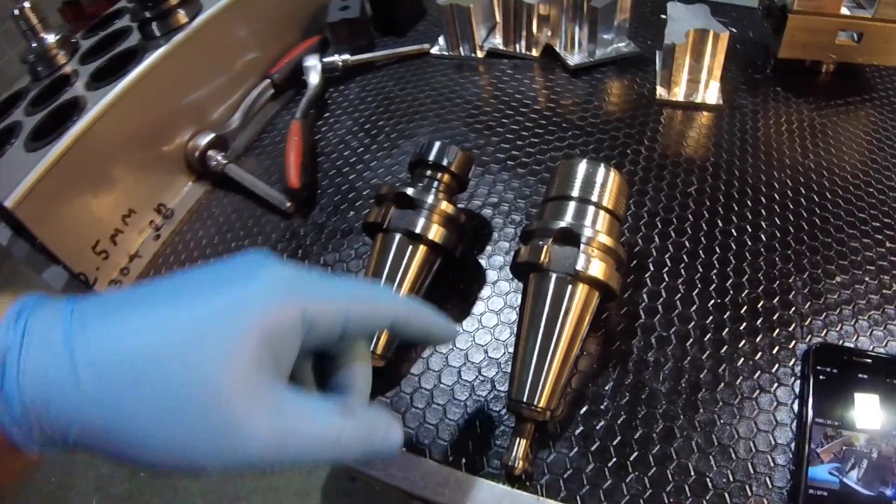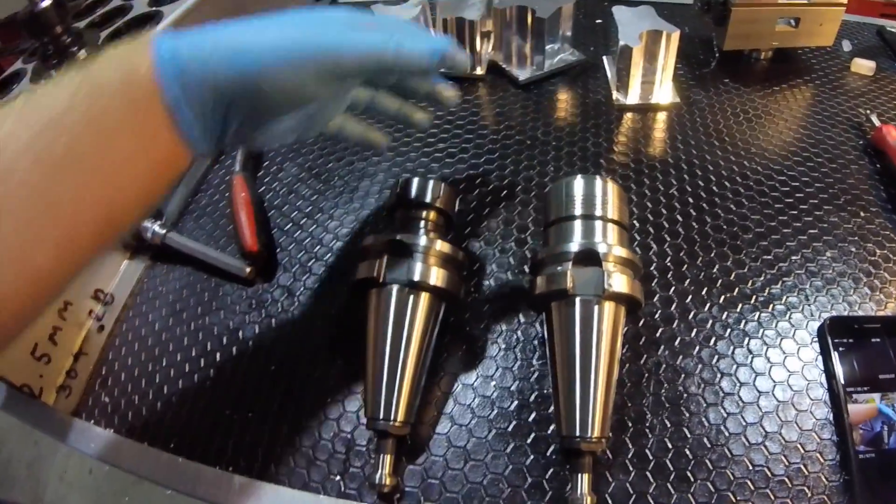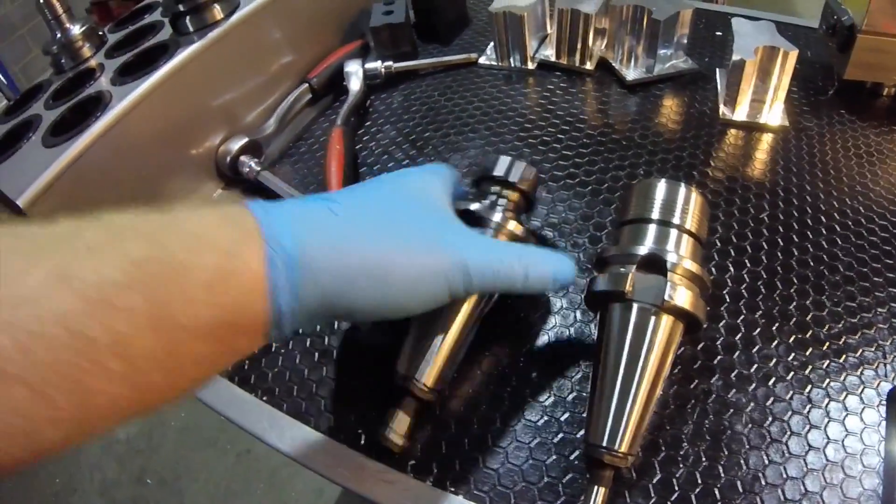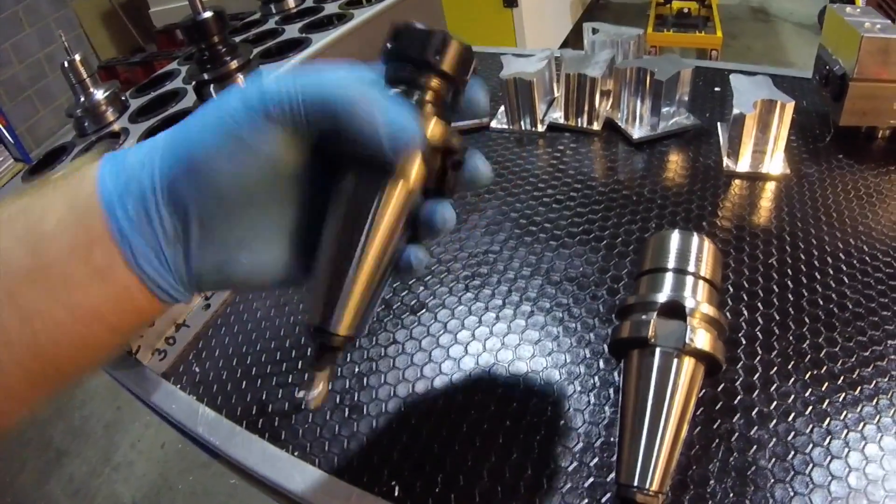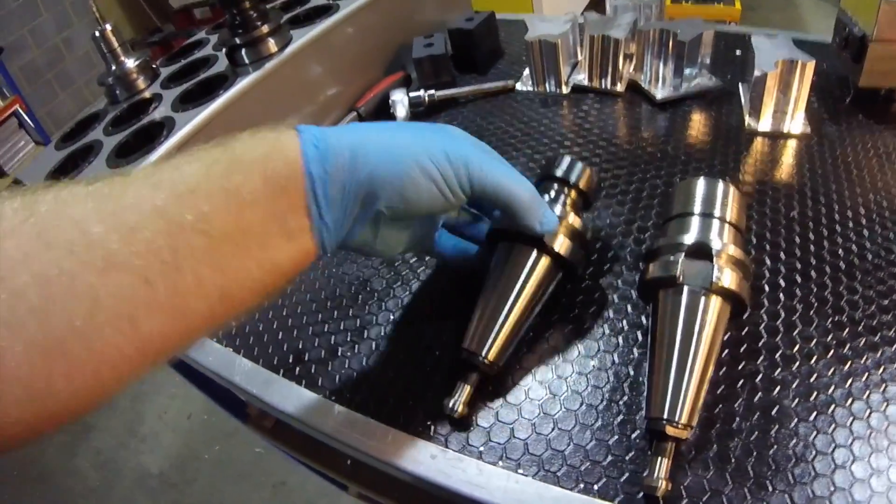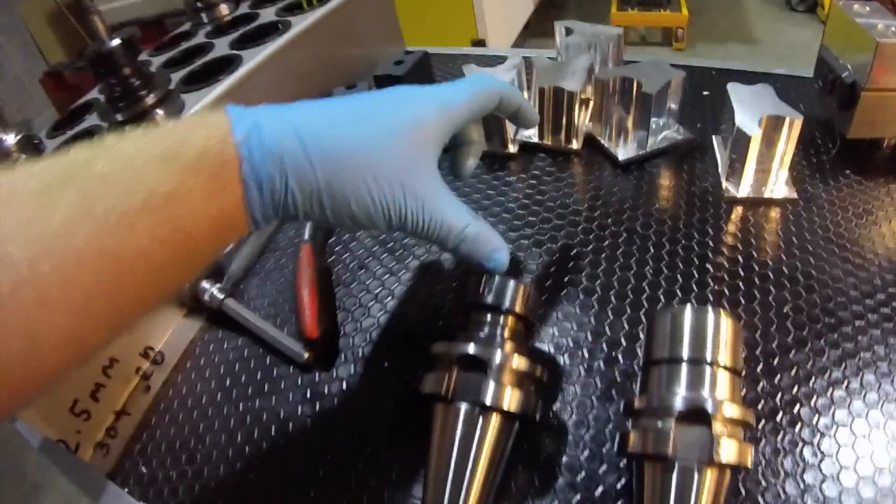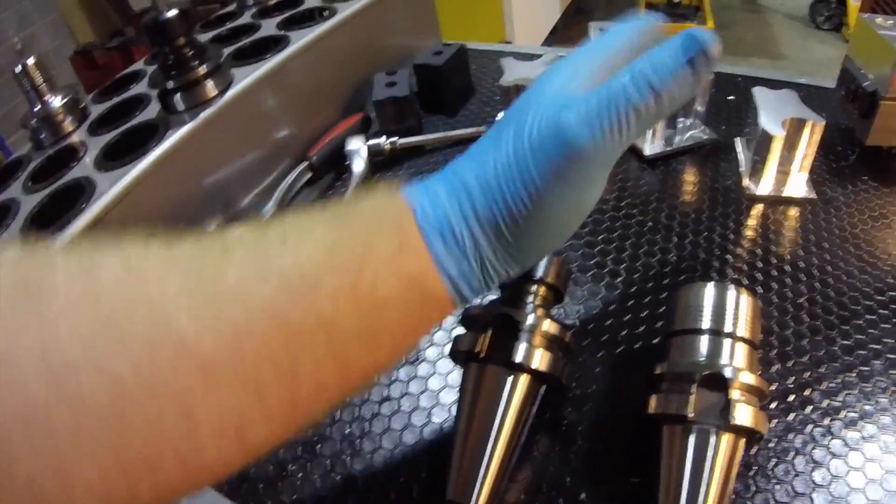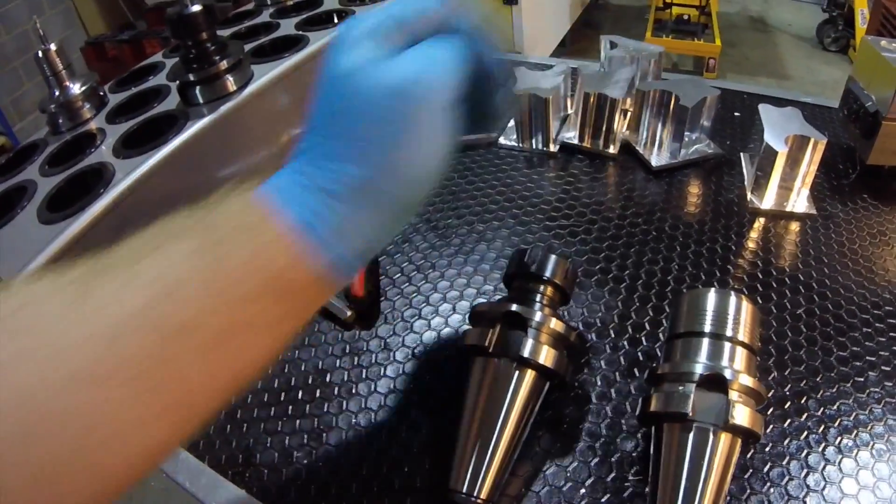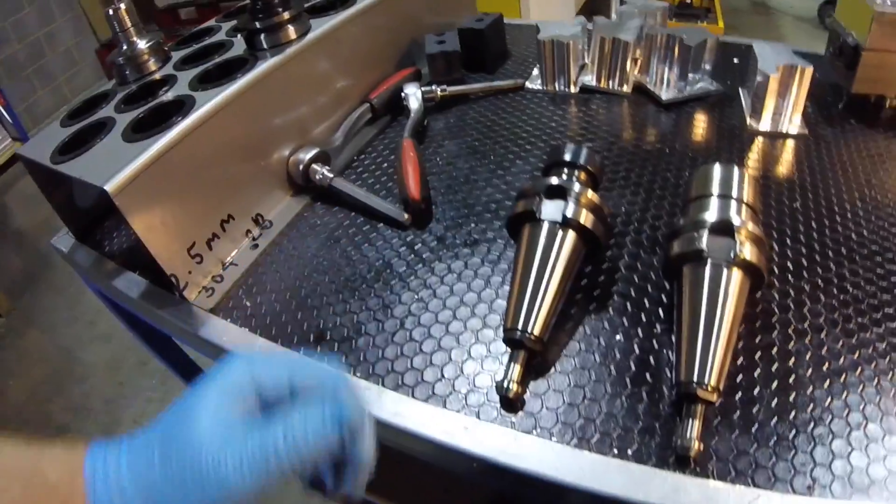As I said about the high precision collets and the high precision collet chucks, it makes a massive difference to the finishing on your machining. A traditional machine shop would use a standard ER collet chuck, this costs about £20-25. It's ok for doing drilling and a few light bits of work but the run out on the cutter when you have the cutter stuck out, the tool wobbles around like this, it's not very precise so you can't take big cuts.